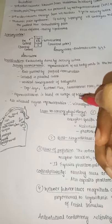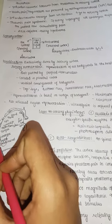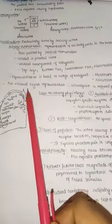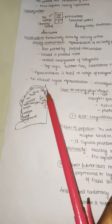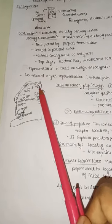In the sensory homunculus, legs are at the top (medial) and face is at the bottom lateral. Maximum representation is given to lips and thumbs because they are most used. Minimum representation is given to trunk and hips. There is no visceral organ representation in the homunculus, so visceral pain is always referred pain.